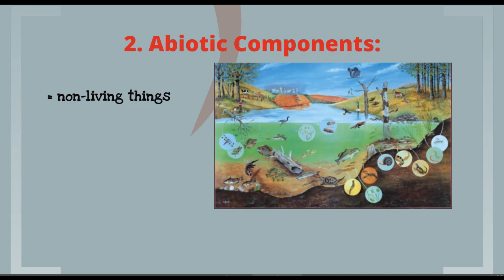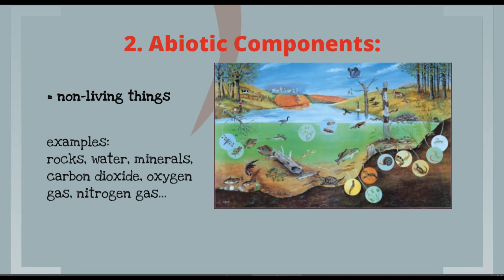The non-living part of ecosystems are the abiotic components. In Latin, if you put an 'a' at the beginning of a word, it means 'not that' — so these are the non-living components. Examples include rocks, water, minerals, carbon dioxide, oxygen gas, and nitrogen gas. If we look at this pond, in addition to the living biotic component, we have many non-living components as well.